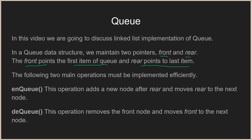These are the prerequisites when we implement a queue. We have to implement two main operations: the first is the enqueue operation and the second is the dequeue operation. Enqueue adds a new node after the rear and then moves the rear to the next node, so it is responsible for adding a new item to the queue.